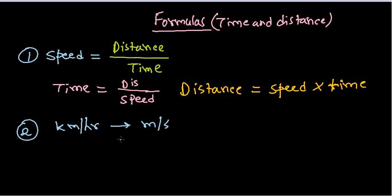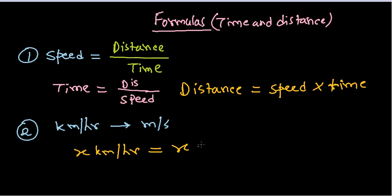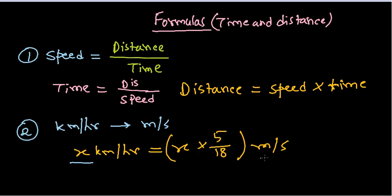How do you convert kilometers per hour into meters per second? You could go for the systematic approach — convert kilometers to meters by multiplying by 1000, then convert hours to seconds — but that's very time-consuming. The simple shortcut is: x kilometers per hour equals x multiplied by 5/18 meters per second. So whatever km/h value is given, just multiply by 5/18 to get the value in meters per second.